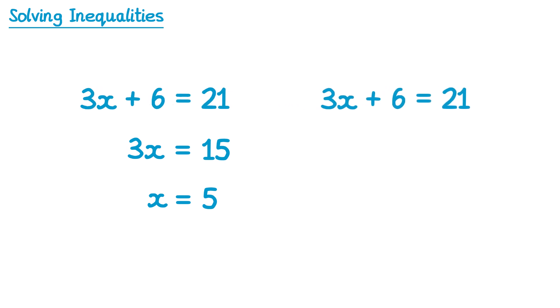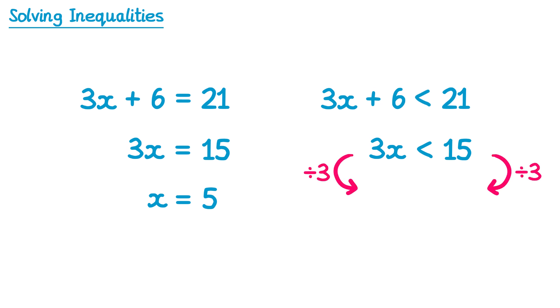If we take another copy of that equation but replace the equals sign with an inequality sign — for example a less than — this now becomes an inequality. The good news is you solve inequalities in exactly the same way you solve equations; we just need to remember to write the inequality sign rather than an equals sign. So we're still going to subtract 6 from both sides, but instead of writing the equals sign, we write the less than sign. On the left hand side the 6s will still cancel, so we have 3x, and on the right hand side 21 subtract 6 is still 15. Then we divide both sides by 3, remembering to write the less than sign. 3x divided by 3 is 1x, and 15 divided by 3 is 5.